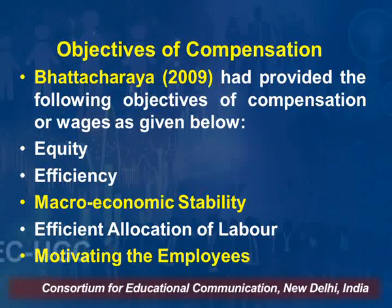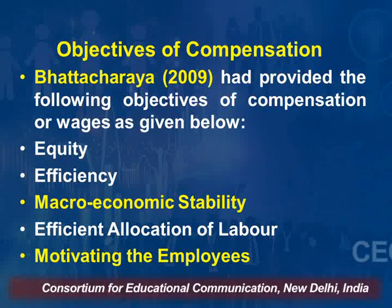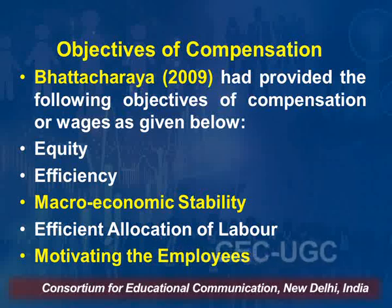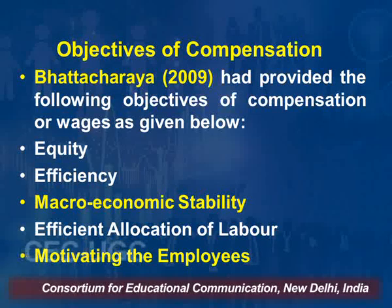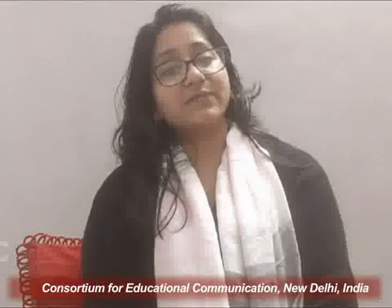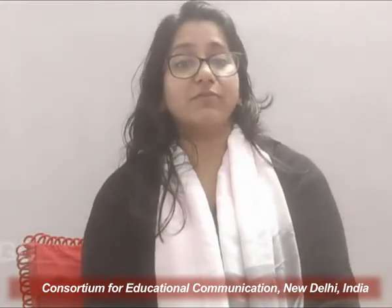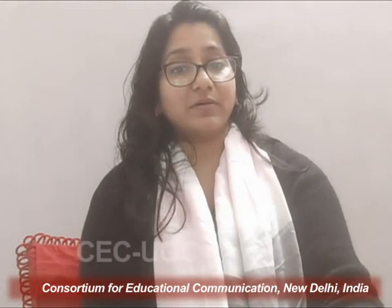What else Bhattacharya discussed in his study is that efficiency, equity, macroeconomic stability, and efficient allocation of labor are the main and very important objectives which should be part of a good compensation plan. If we take the first objective — equity — generally speaking, this category is known for several forms: income distribution through narrowing of inequalities, increasing the income of lowest paid employees, protecting real wages, and the concept of equal pay for work of equal value.